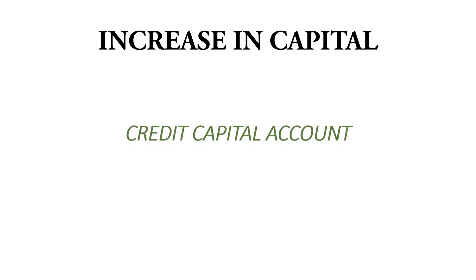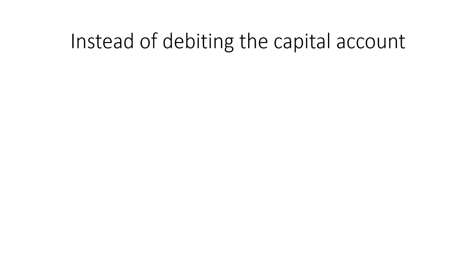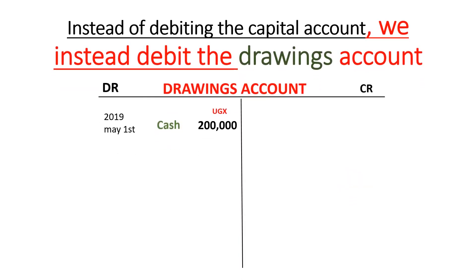We explored the double entry for capital and established that when capital is injected into the business, the capital account is credited. Increases in capital are credited and decreases in capital are debited. So if drawings are incurred, capital is reducing, and we would debit the capital account. But to avoid cluttering the capital account with many transactions, instead we create what we call a drawings account and debit that instead of debiting the capital account.